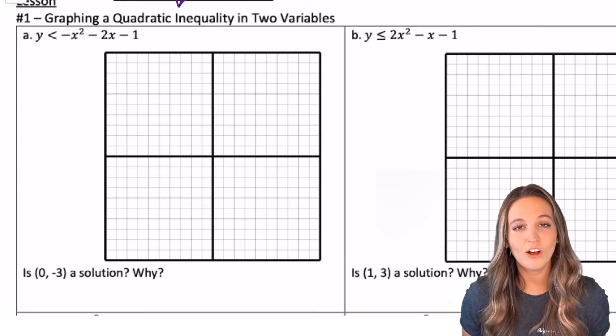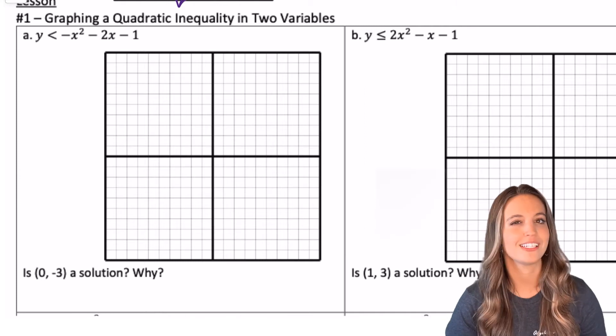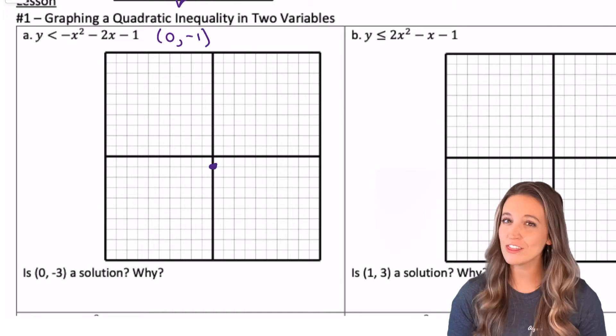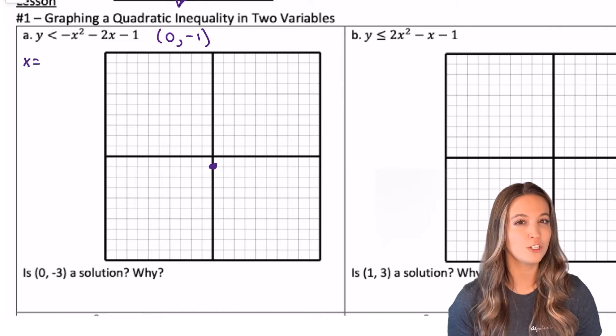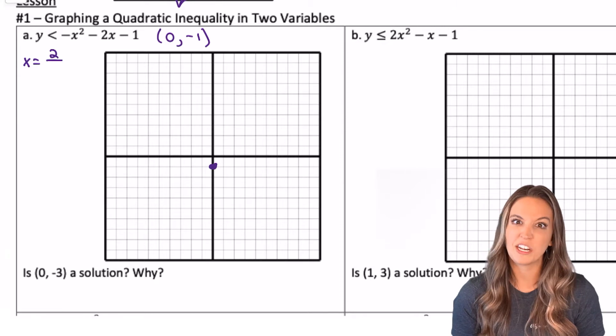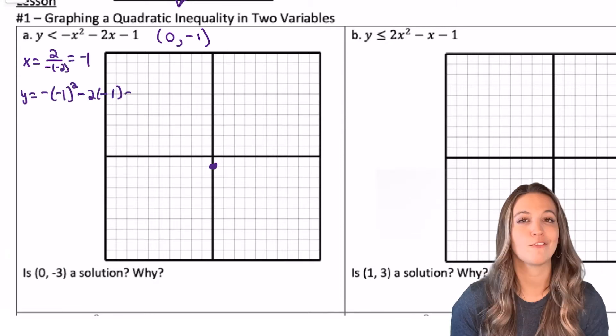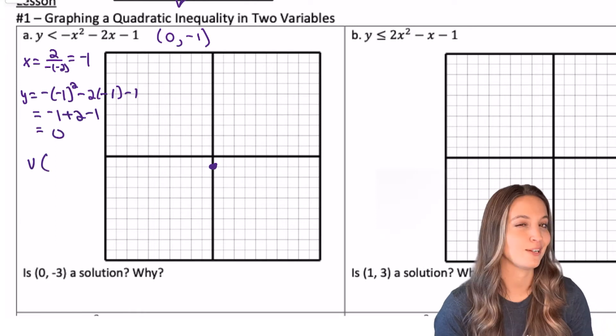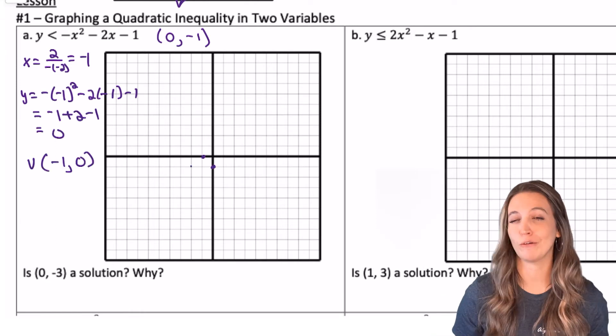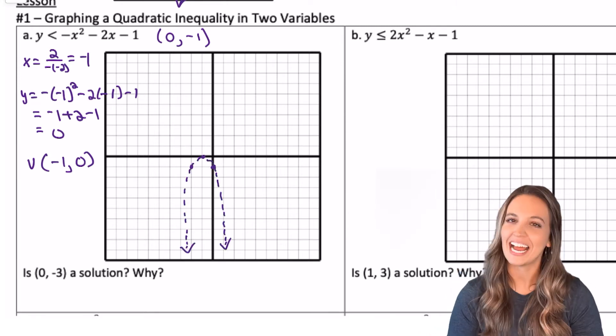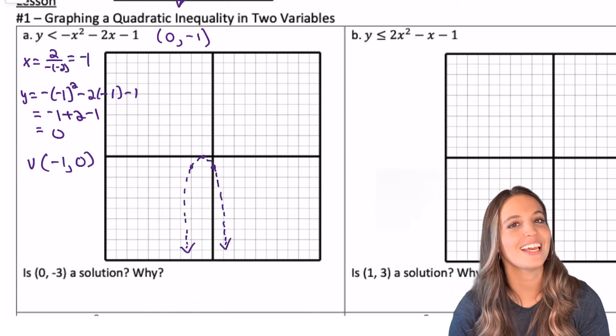Let's graph a quadratic inequality. This first one's in standard form, so I know my y-intercept is 0, negative 1. To find the vertex, x equals negative b over 2a, looks like I'm gonna get x equals negative 1. Plug that back in and we get a vertex of negative 1, 0. Once I plot that, I can reflect my y-intercept and draw my parabola, dashed curve because we're not equal to.